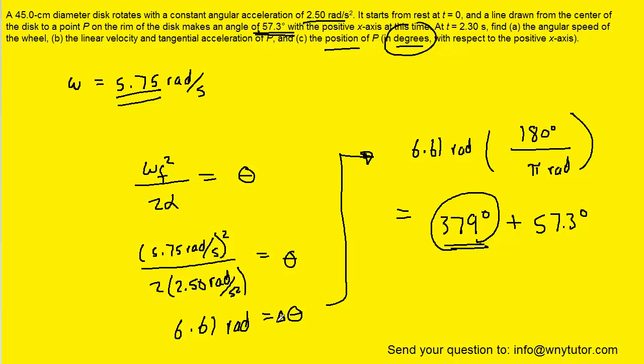In essence, what we had calculated was actually a change in angular displacement. So that really was the appropriate symbol to use. So we'll take the change in angular displacement, add it to the initial angular displacement, and that gives us roughly 436 degrees.